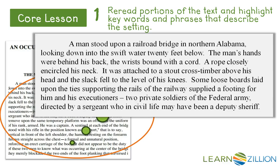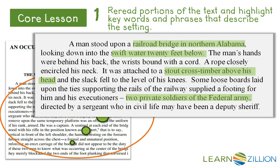In this first paragraph, those words and phrases include the railroad bridge in northern Alabama, the swift water 20 feet below, the stout cross-timber above the man's head, and the two private soldiers of the Federal Army. I included the private soldiers of the Federal Army because, together with the description of northern Alabama, this lets me know that this story takes place during the American Civil War.